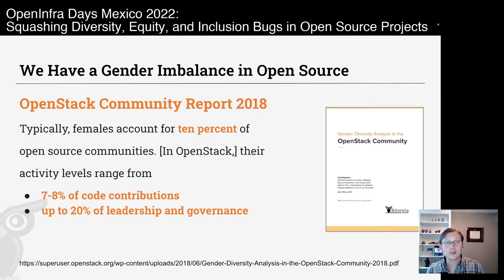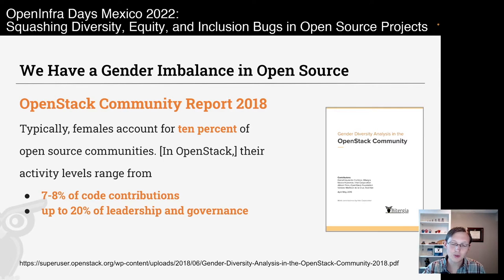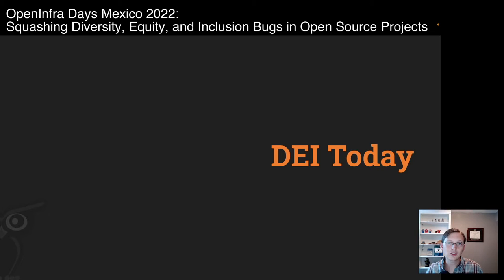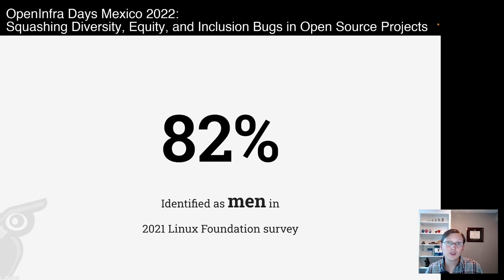The ratio in code contributions is even a little bit less. In leadership and governance it's higher, which is good — we want examples in leadership positions that can lead the way and help improve things overall. Looking at more recent data, the Linux Foundation survey from last year found that still 82% of respondents were men. There are some hopeful things: open source is becoming more welcoming, and 82% of respondents felt welcome.